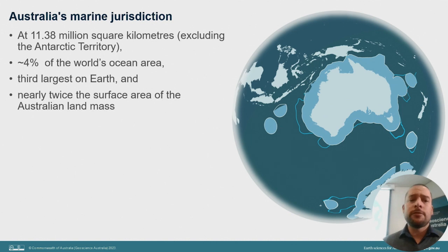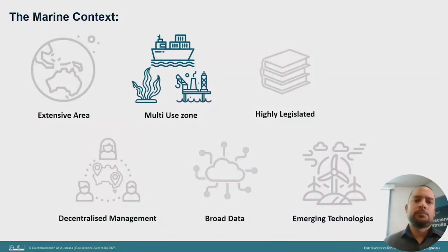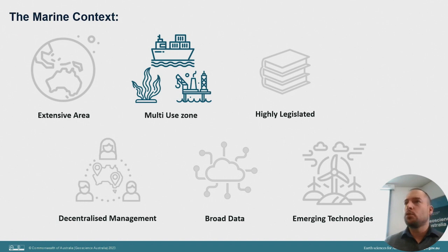To put this into local perspective, the largest water body within our region here is Lake George, and according to Digital Earth Australia water bodies, it's currently over 144 square kilometres — that equates to approximately 80,000 Lake George equivalents to make up our marine jurisdiction. Our offshore area is inherently a co-use zone, supporting many diverse uses on the surface, above, within the water column, on the sea floor and below.